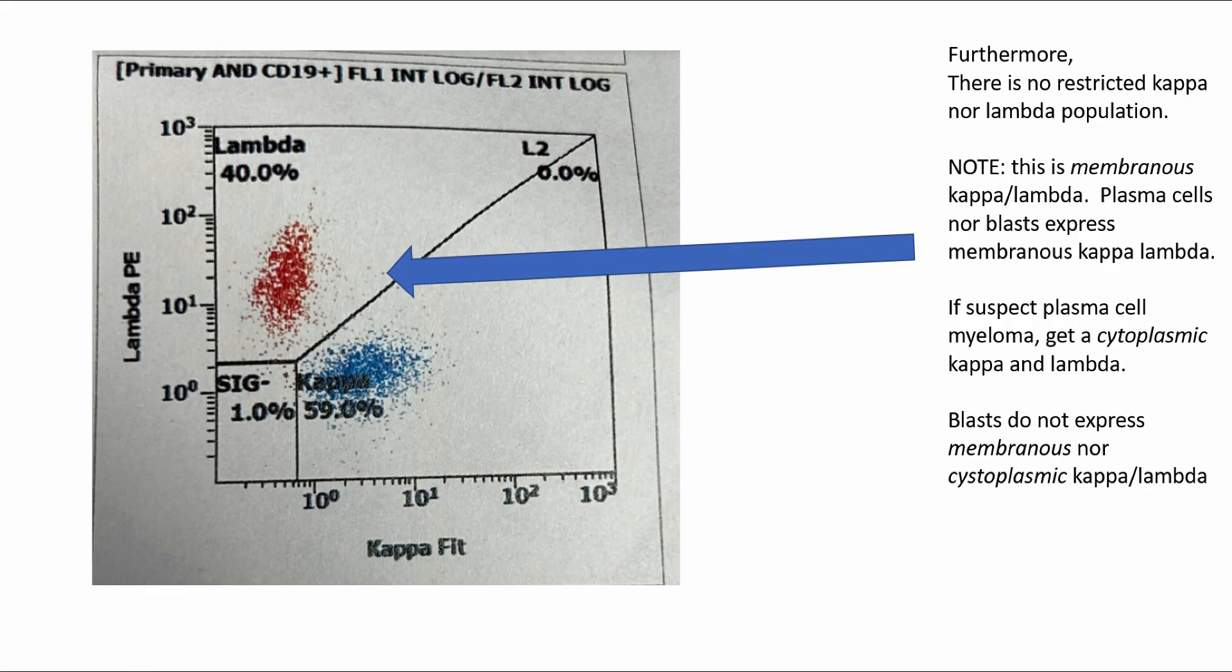That's why if you suspect plasma cell myeloma, you should get a cytoplasmic Kappa Lambda. And then for blasts, which are so immature, they typically do not express membranous nor cytoplasmic Kappa Lambda.